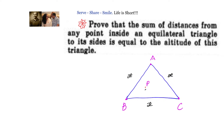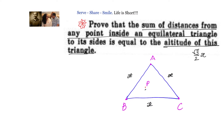What is the altitude of an equilateral triangle? If the side is x, then the altitude is given by root 3 by 2 into x. So we have to prove that the sum of distances from any point inside an equilateral triangle to its sides is equal to root 3 by 2 into x.